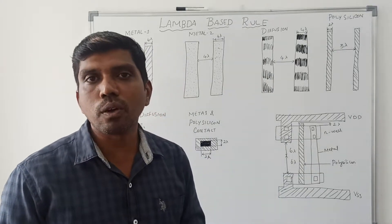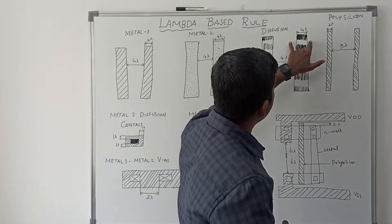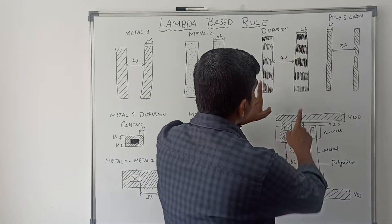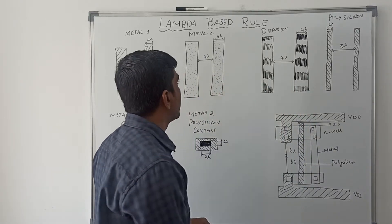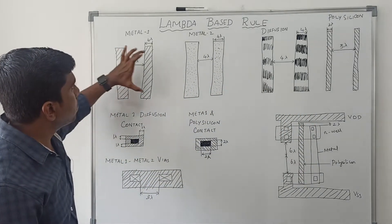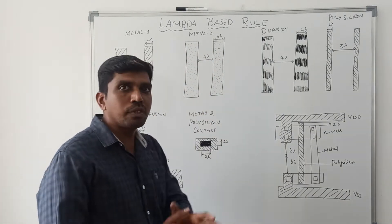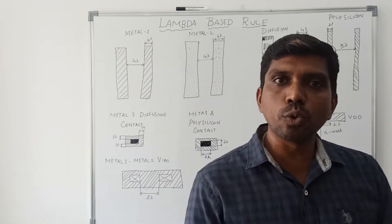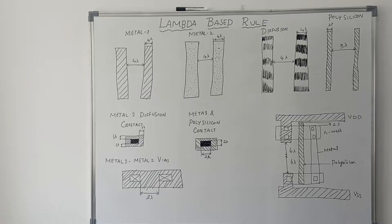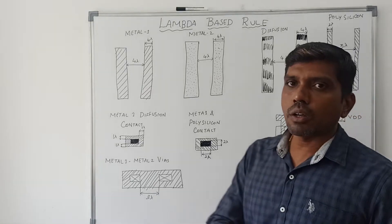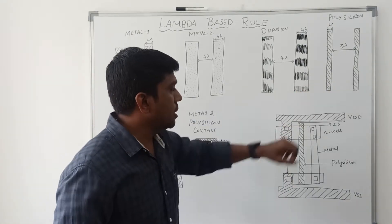Diffusion, which can be n-diffusion or p-diffusion, is represented by a partially shaded rectangular box. The minimum width of diffusion is 4 lambda, and the spacing between two diffusion regions is 4 lambda. So for metal 1, metal 2, and diffusion, the width is 4 lambda and the spacing between them is also 4 lambda.